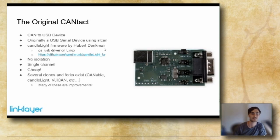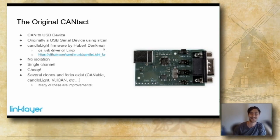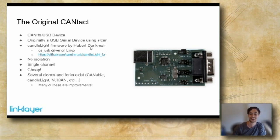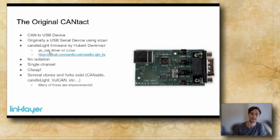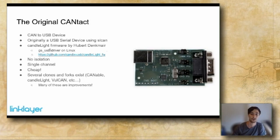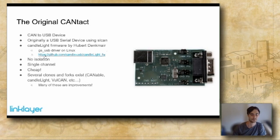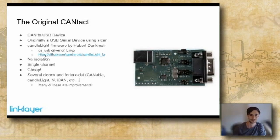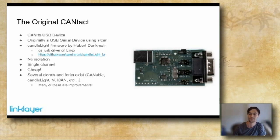Originally, this used something called SL-CAN or Serial Line CAN, which does CAN over a virtual serial port. It's really slow and you don't want to use it. Thankfully, Hubert Deckmeyer wrote firmware called Candlelight, which targeted the existing GS USB driver already in mainline Linux. Once he wrote that firmware, you could reflash the device over USB, load his driver, and plug it into any Linux system where it becomes a CAN network interface. But it had limitations — no isolation, so voltages on the CAN port could theoretically reach your computer, and it was single-channel.